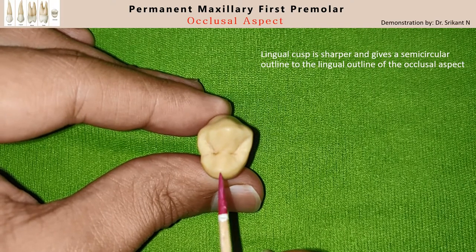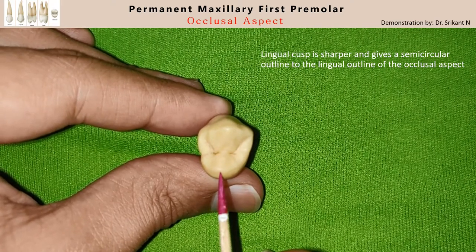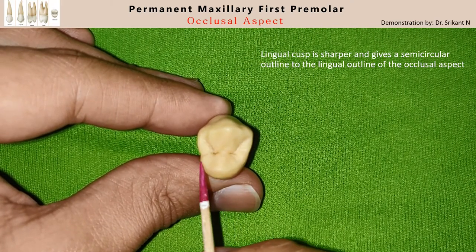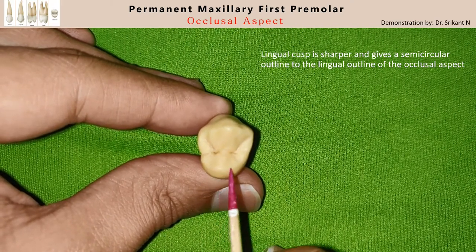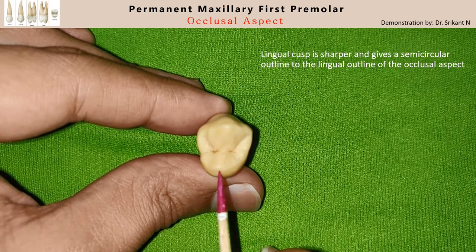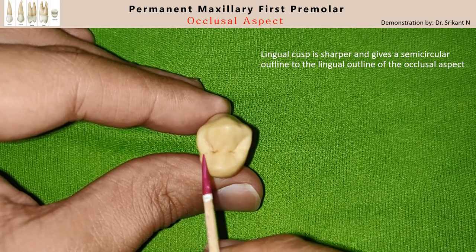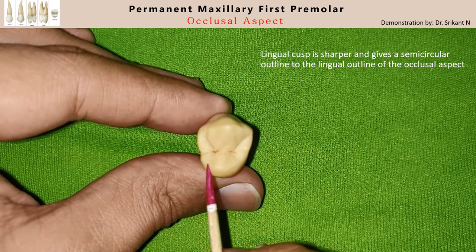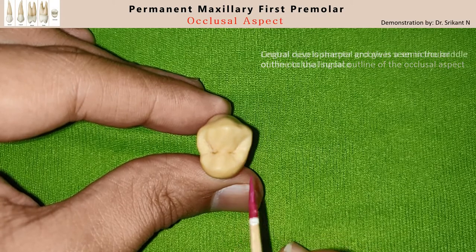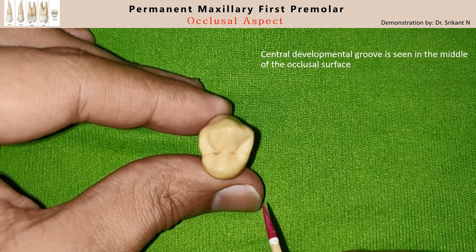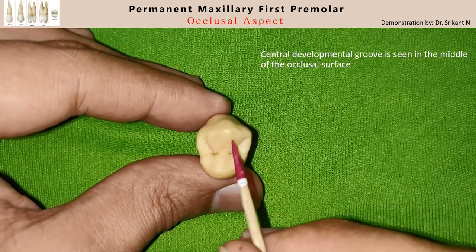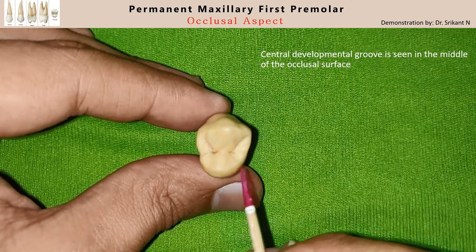Coming on to the lingual cusp — the lingual cusp is a little more sharper, and the mesial and the distal cusp ridge of the lingual cusp form a continuation to create a semicircular lingual outline.